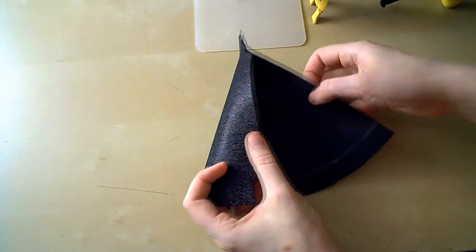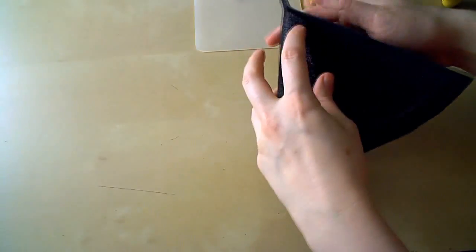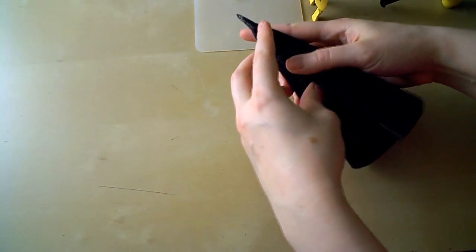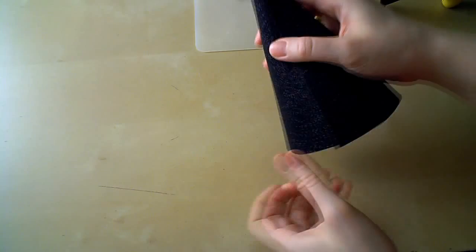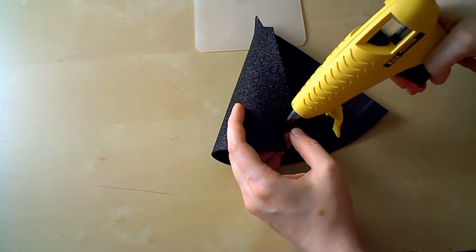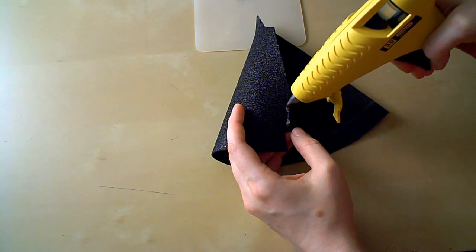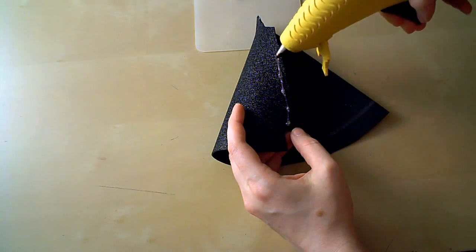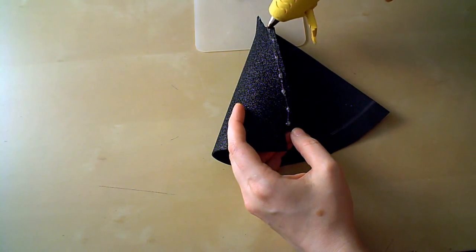Now we're going to fold this flap under and glue the rest of the cone together. If you want to do a dry run without glue, this is what we're shooting for. So go ahead and apply your glue. And the closer it is to the edge on this flap, the better, because the less likely it will be to spoo out from underneath.